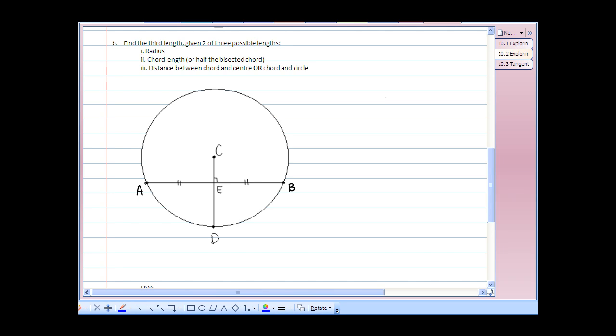Another possibility of how we can apply our chord properties to solve a problem is to find a missing length. So, possibilities might include using the radius, in this case being CD.